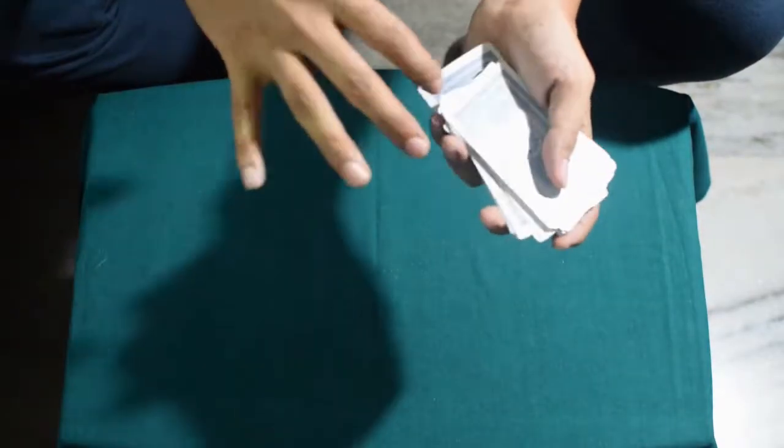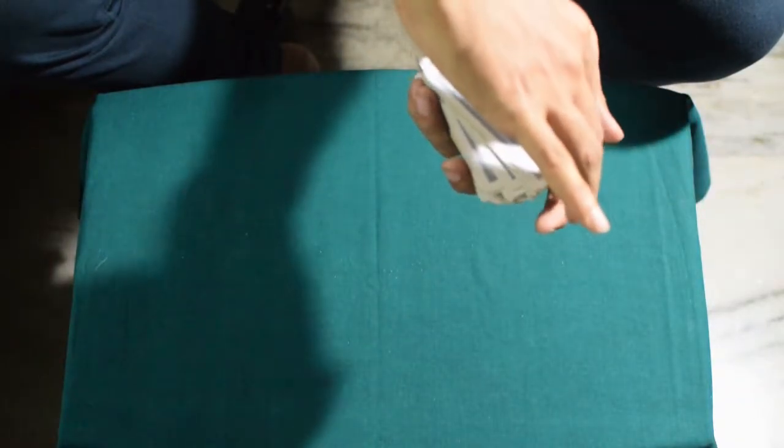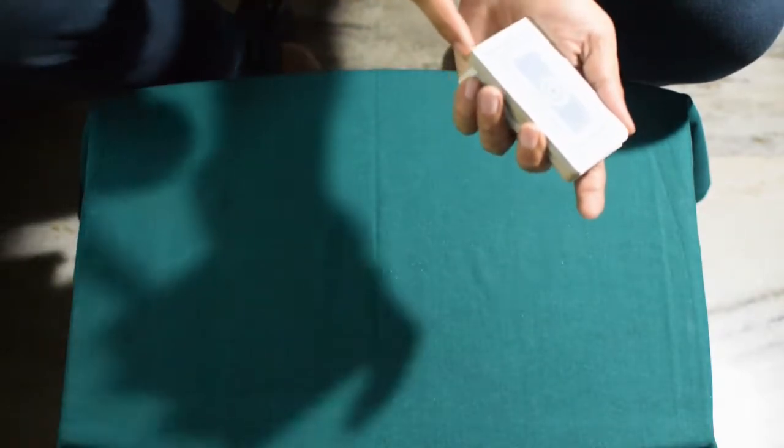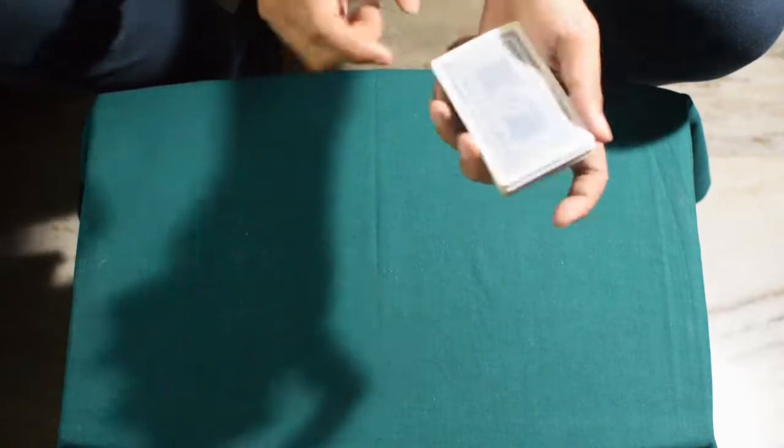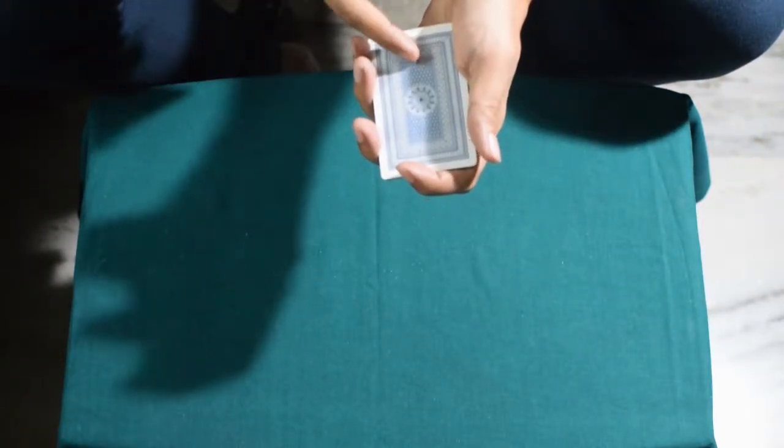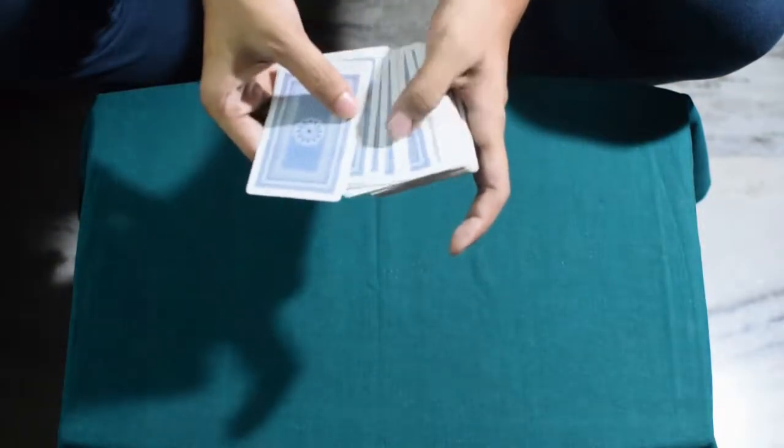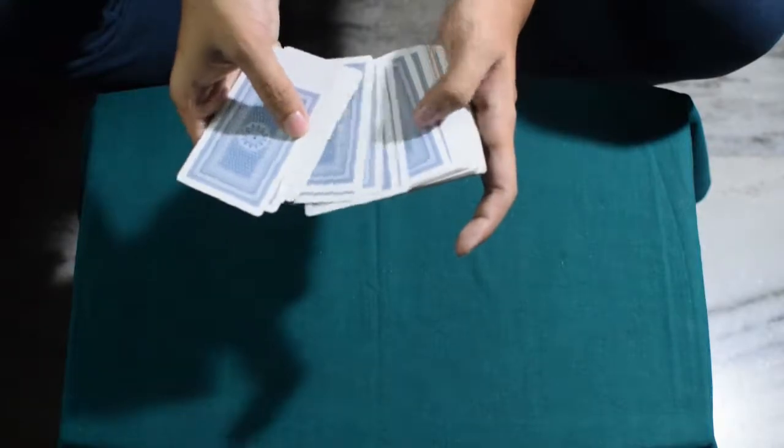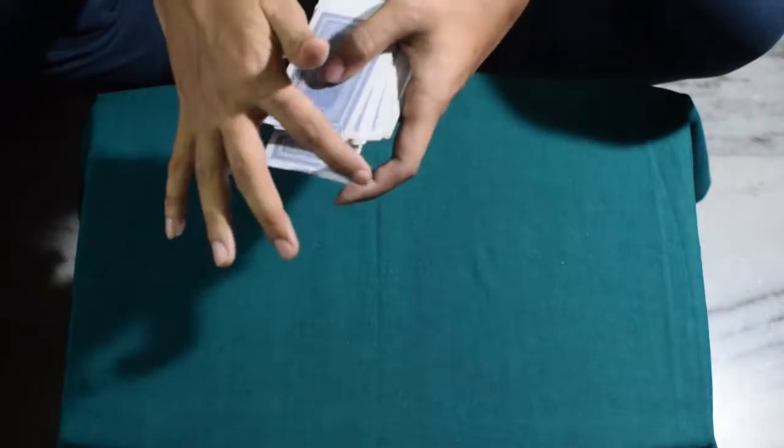And then as you square this deck up, you hold the pinky break like this on top of the 11 cards that you chose. So now what you do is you hold the pinky break on top of your 11 cards, and then you fan the cards like this and ask the spectator to select any card they wish. Let's say they chose this card.